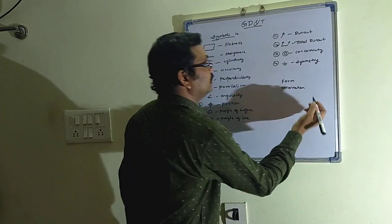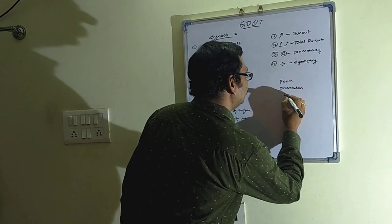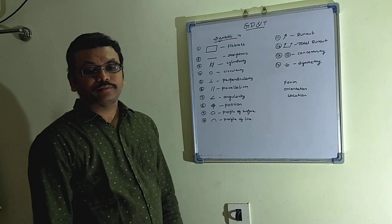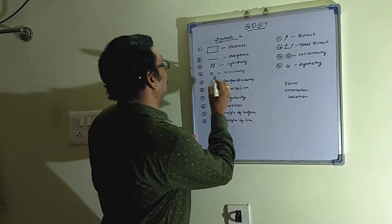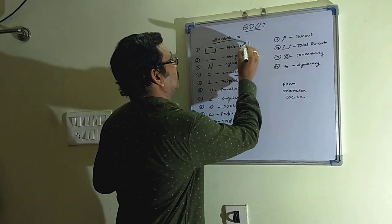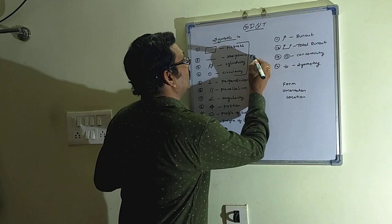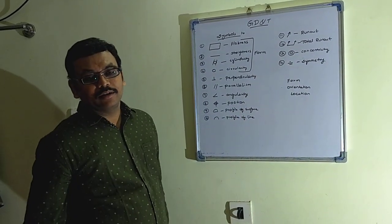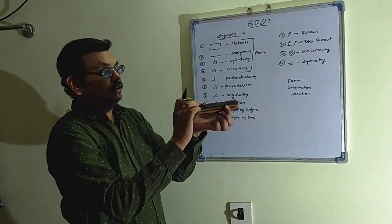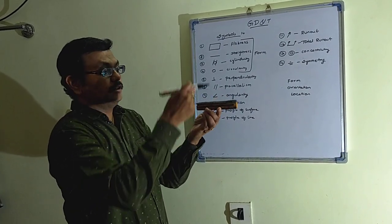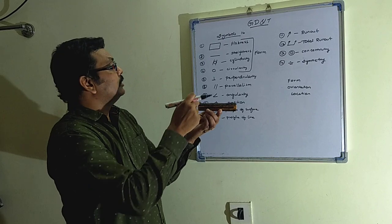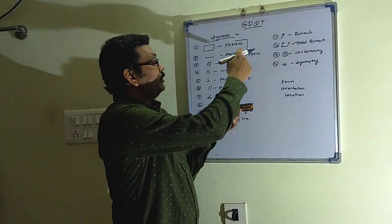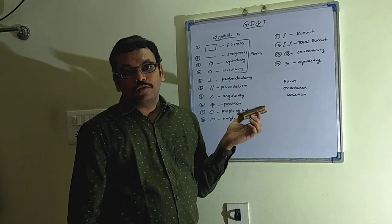By using these 14 symbols we are going to define a component with respect to form, orientation, location, and run-out. These 4 - flatness, straightness, circularity, and cylindricality - are used to control the form of a component.